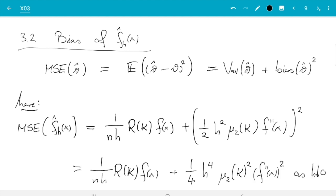And then we just get 1/4 h⁴ second moment squared and second derivative also squared. That's again true as h goes to zero. There will be error terms, but the error terms in the variance will be negligible with respect to that one, and the error terms for the bias will be negligible with respect to this.